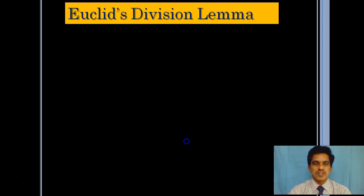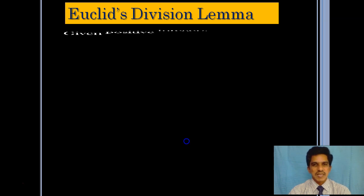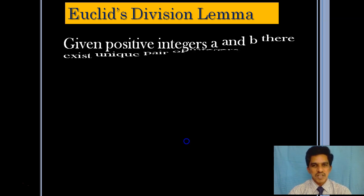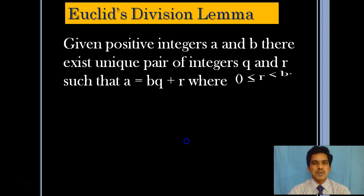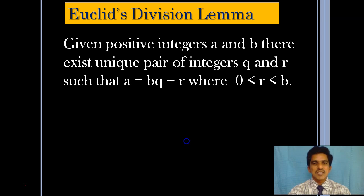Before going to the solutions to the problems, let us recall what Euclid's division lemma says. Euclid's division lemma states that given positive integers a and b, there exists a unique pair of integers q and r such that a is equal to bq plus r, where 0 is less than or equal to r and r is less than b.